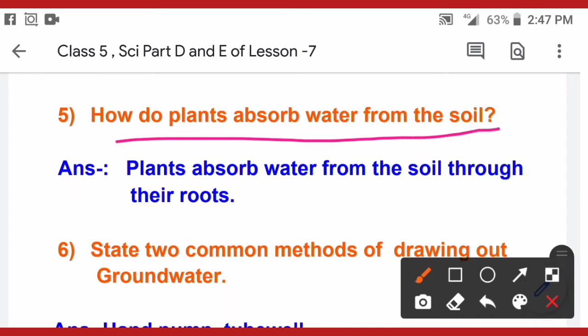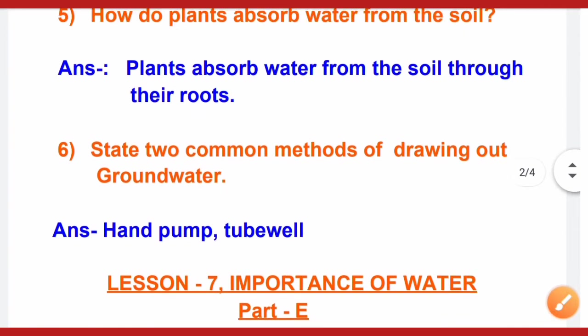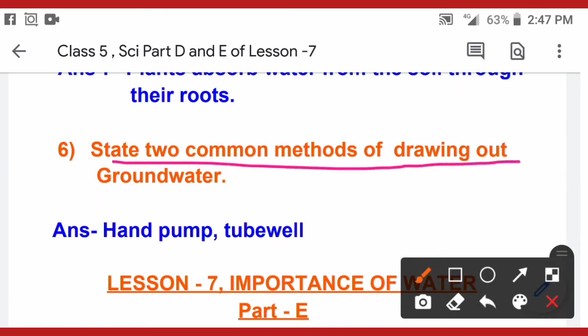Question number 5: how do plants absorb water from the soil? Plants absorb water from the soil through their roots. Question number 6 is about drawing out groundwater — methods include hand pump, tube well, and submersible pumps which we put in the house.